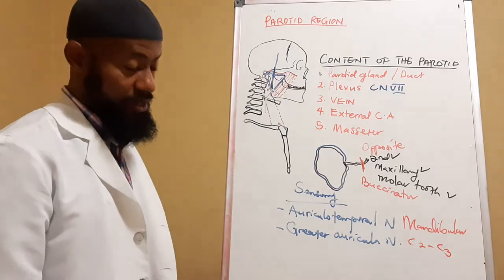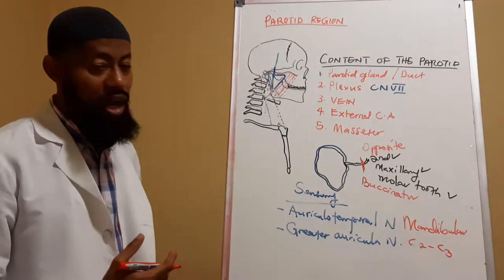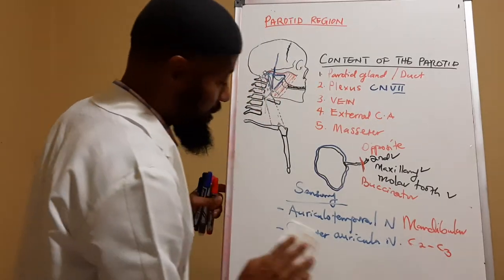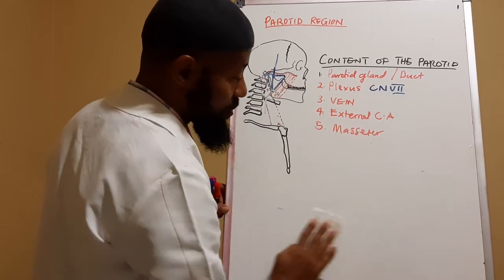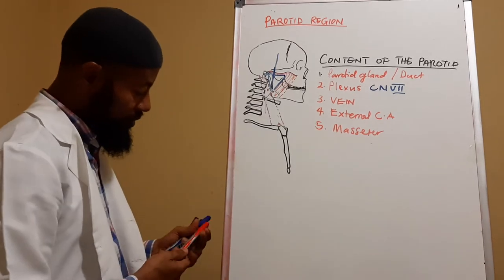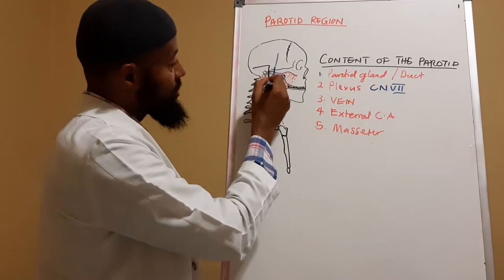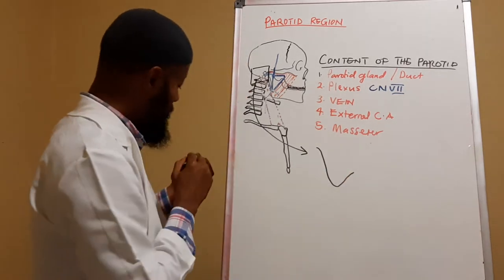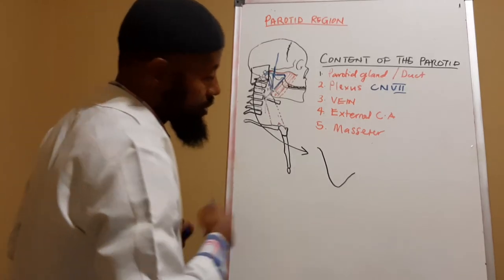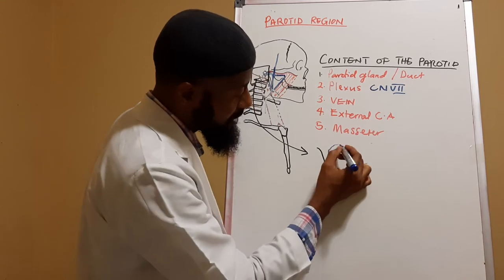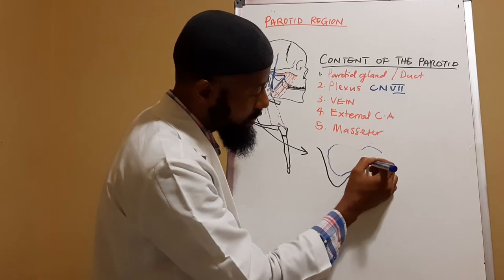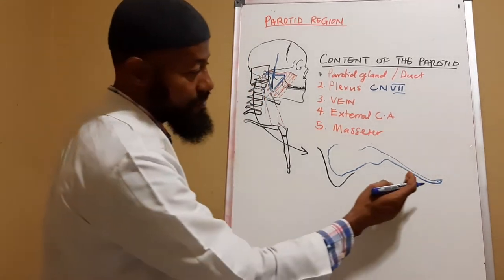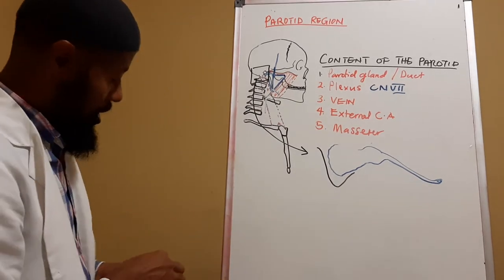The autonomic innervation of this gland is both parasympathetic and sympathetic. The parasympathetic innervation is through the glossopharyngeal nerve. To understand this, we look at the mastoid bone area. When we expose the mastoid bone, we see the tympanic cavity, which extends to an opening into the pharynx via the pharyngotympanic tube. There is a plexus of nerves in the tympanic cavity.